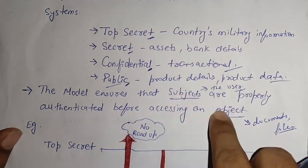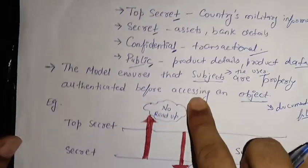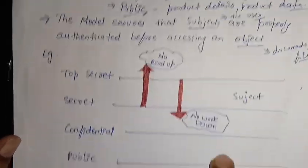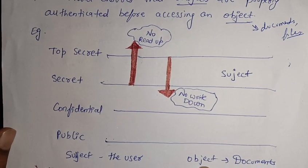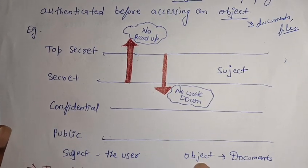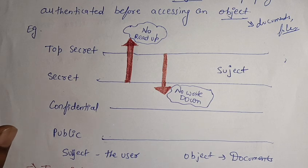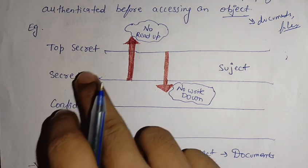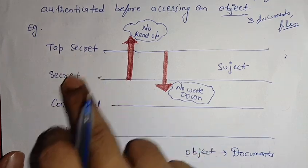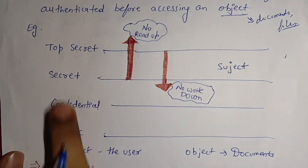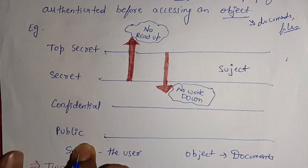Now we will see these concepts with an example. I have drawn a diagram to make it very easy and clear to understand. We have taken four types of information — top secret, secret, confidential, and public — which represent all the data an organization holds.